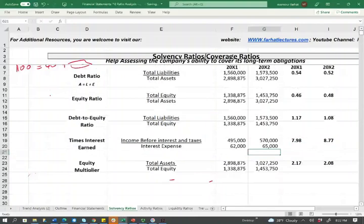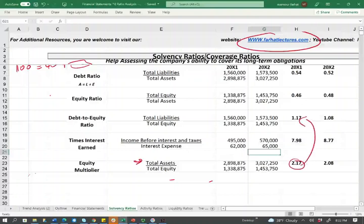Those are the solvency ratios. What should you do now? Work multiple choice questions. Go to Farhat Lectures, subscribe, work multiple choice questions. Download the Excel sheet and play with it. See how the numbers are working. Change the total assets to see how the equity multiplier will work and see how debt to equity ratio will work. Good luck. Study hard. And if you're studying for your CPA exam, it's worth it.